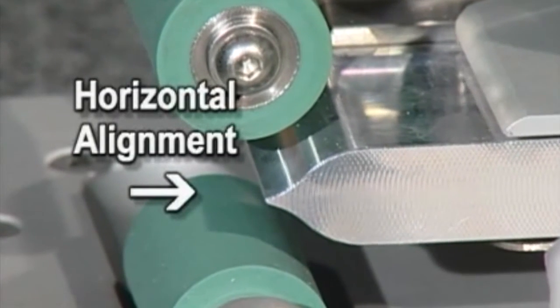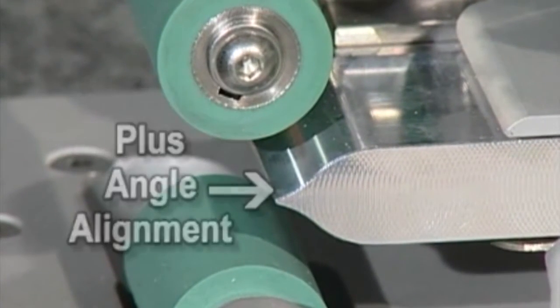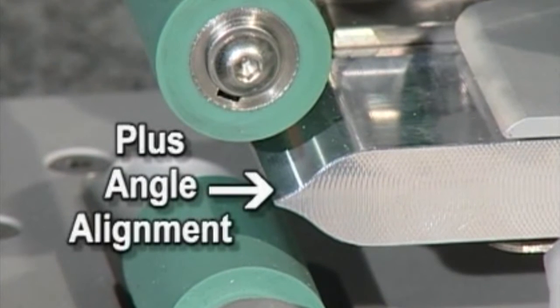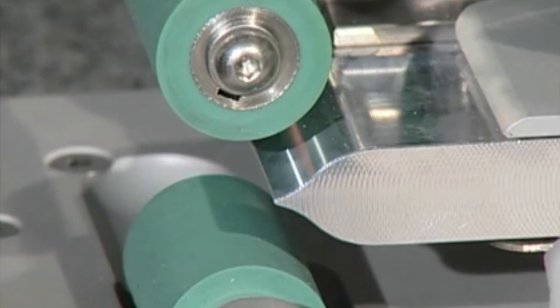Each quarter turn rotation clockwise and the angle correction will move the wedge approximately 1-64th of an inch forwards or away from the pressure rollers. When completed, re-tighten the locking nut on the adjustment screw.